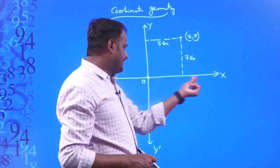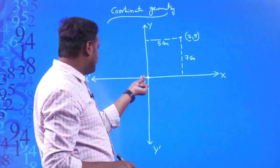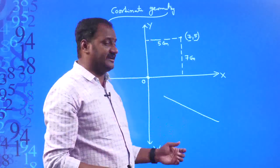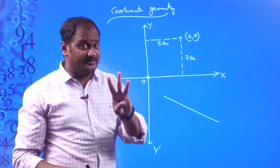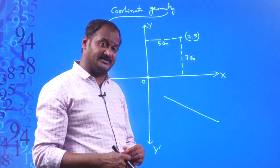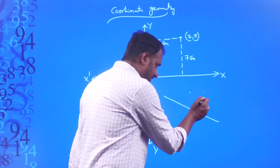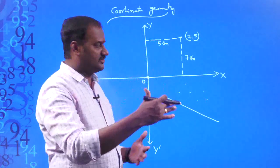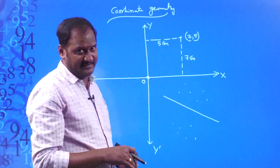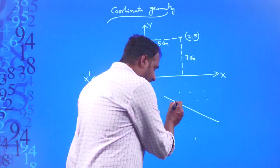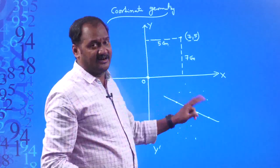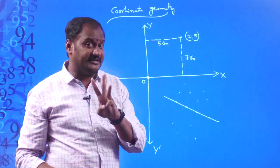Now coming to the point: this is positive x-axis, this is positive y-axis, this is negative x-axis, and this is negative y-axis. Suppose if you draw a line on a plane, that line divides the plane into three mutually disjoint sets of points: the points lying above the line, the points lying below the line, and the points lying on the line itself — because a line is made up of infinitely many points.